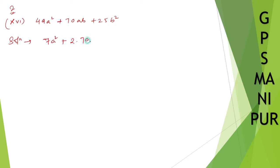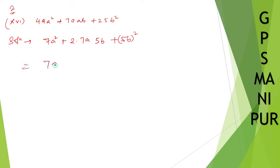Plus twice 7a times 5b, plus (5b)². So 7 times 5 is 35, times 2 is 70 — that gives 70ab, which is correct. So we can write this as a² + 2ab + b², which equals (a + b)². Therefore the answer is (7a + 5b)².